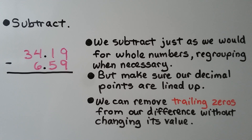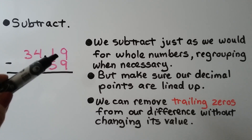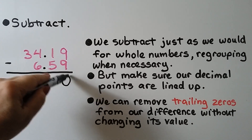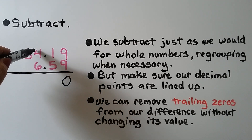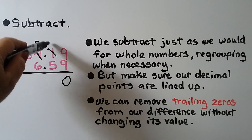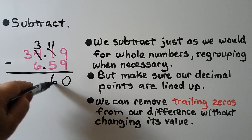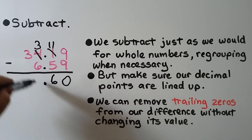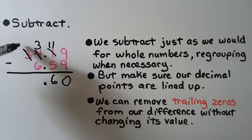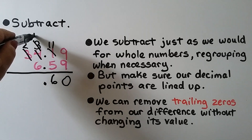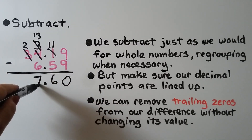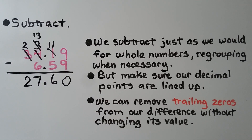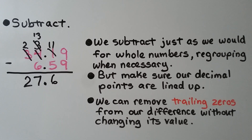Here we have 34 and 19 hundredths minus 6 and 59 hundredths. We subtract just as we would for whole numbers, regrouping when necessary, but make sure our decimal points are lined up. Starting in the hundredths place: 9 minus 9 is 0. We have 1 tenth minus 5 tenths — we can't, so we regroup from the ones place; that becomes a 3 and the tenths become 11. 11 tenths minus 5 tenths is 6 tenths. We have 3 minus 6 — we can't, so we regroup: that 3 becomes a 2, and this 3 becomes a 13. 13 ones minus 6 ones is 7 ones. We have 2 tens, which drop down. We have 27 and 60 hundredths, and we can remove the trailing zero to get 27 and 6 tenths.